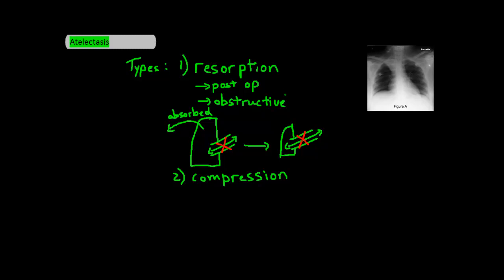Resorptive atelectasis is definitely the most common one. The most common types you'll see in this category include post-surgical atelectasis or obstructive atelectasis, such as from a tumor or mucus plug. What happens here is that there's poor exchange of air in parts of the lungs, and the air that's in the lungs gets reabsorbed by the body, leading to collapse of that lung.